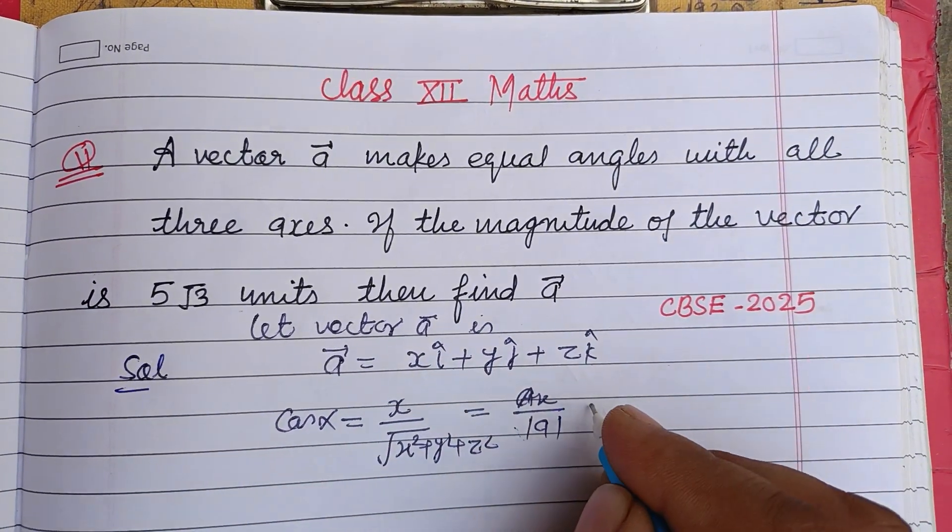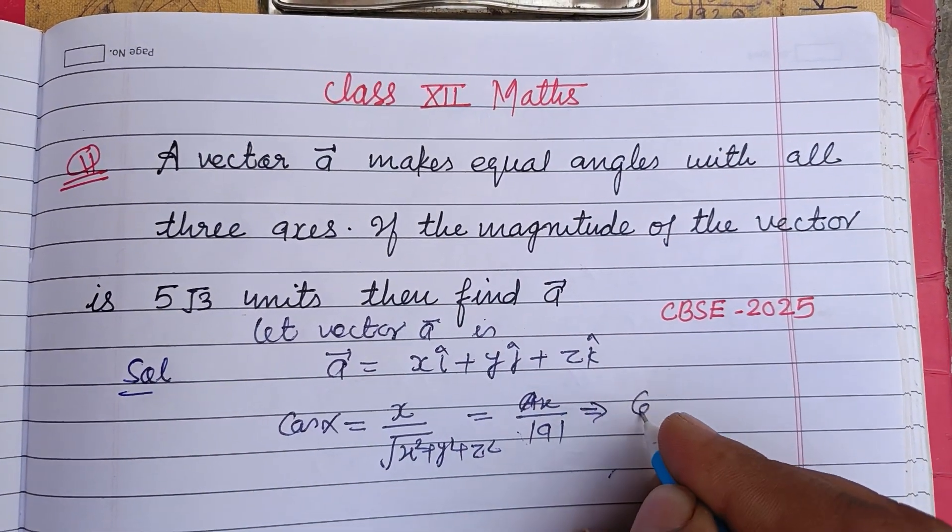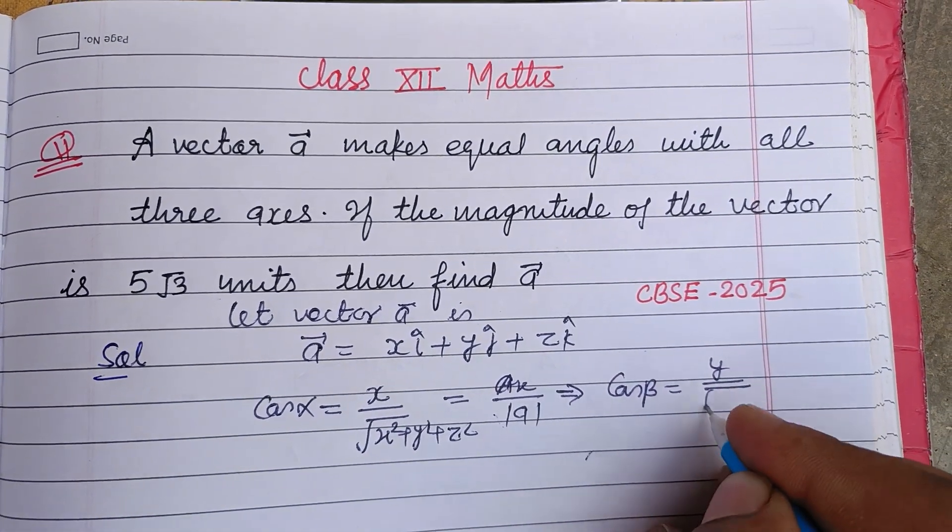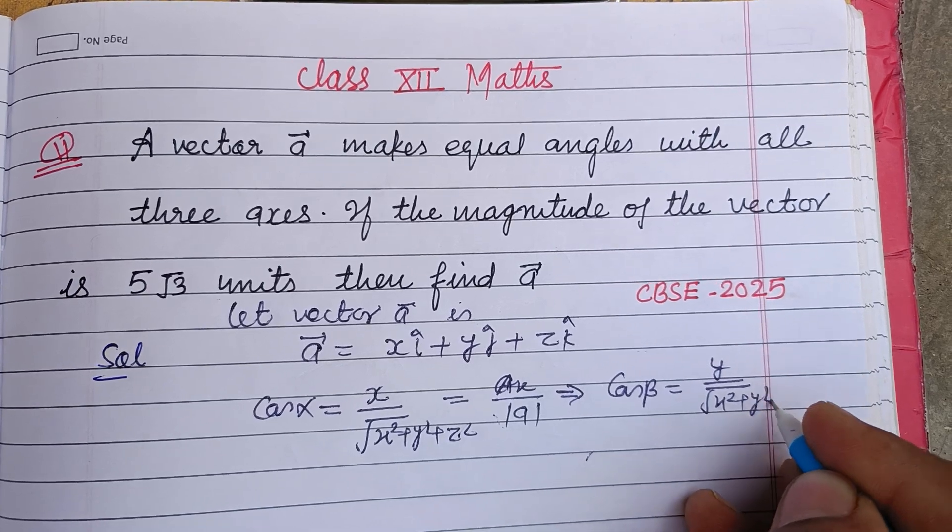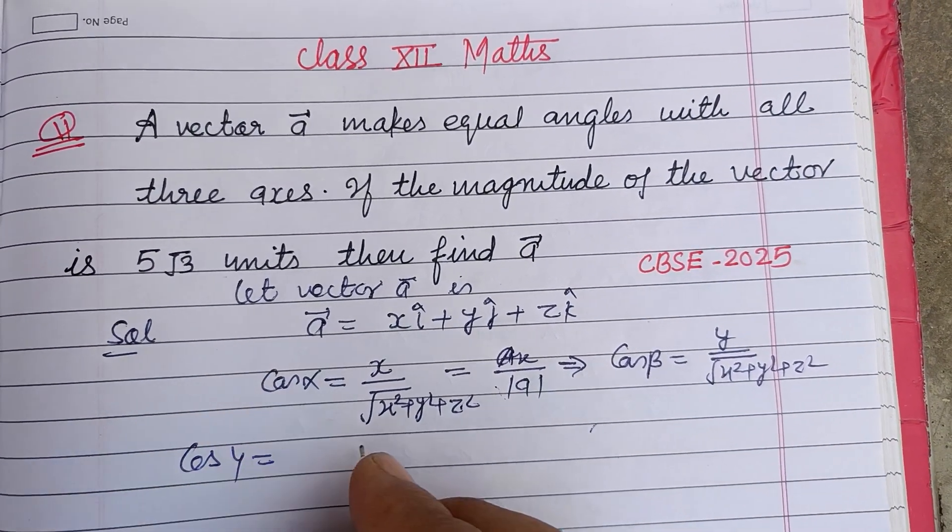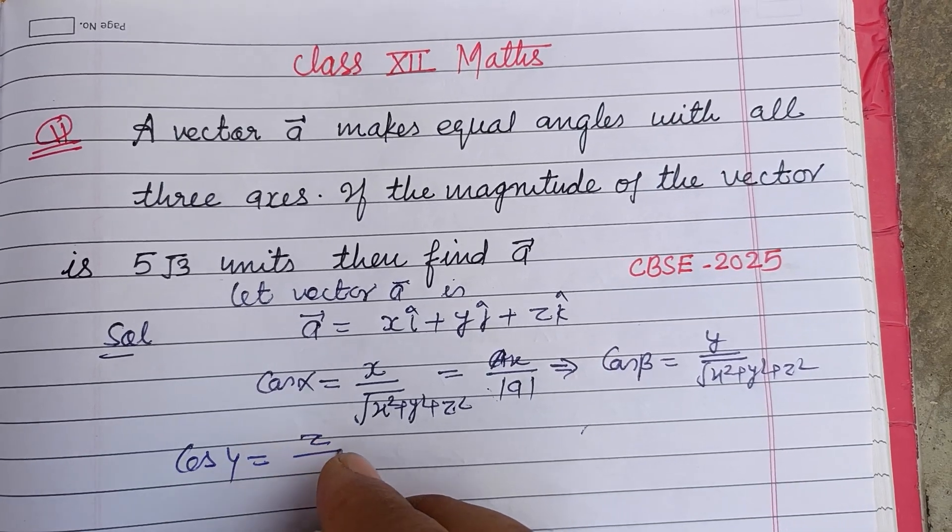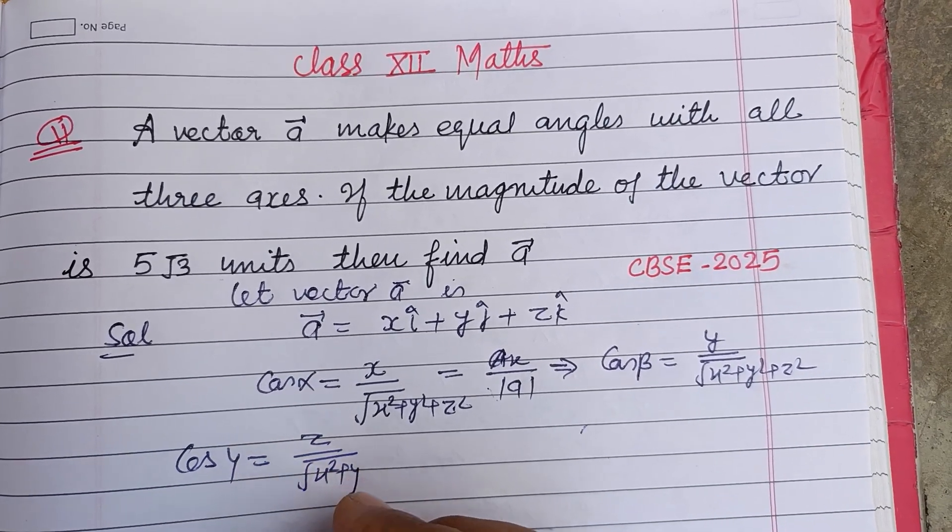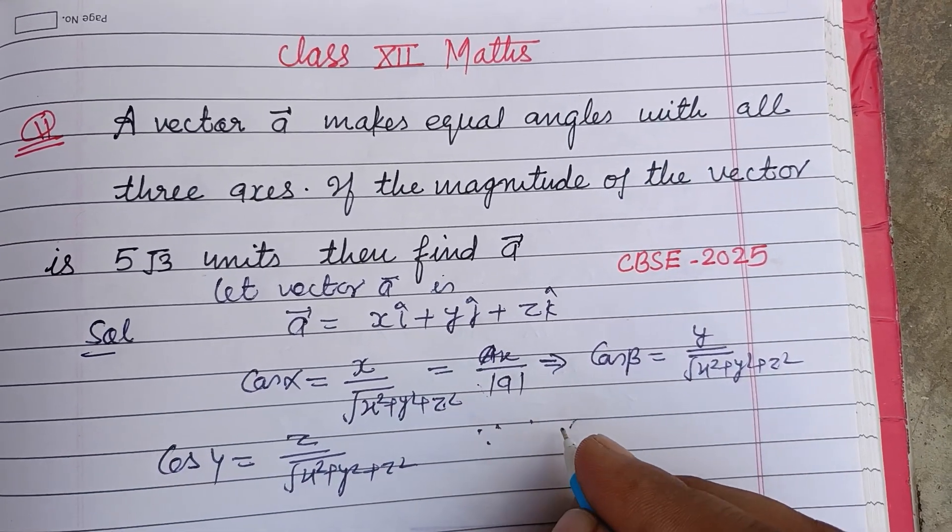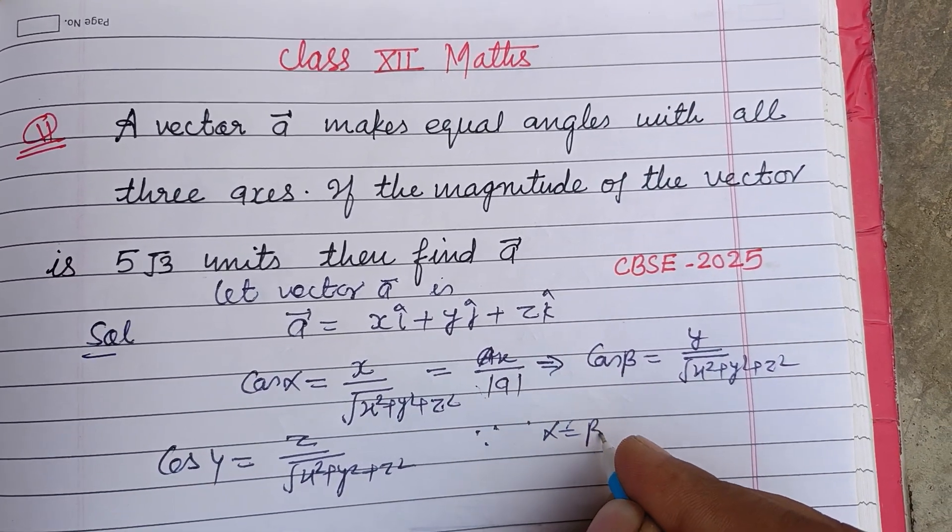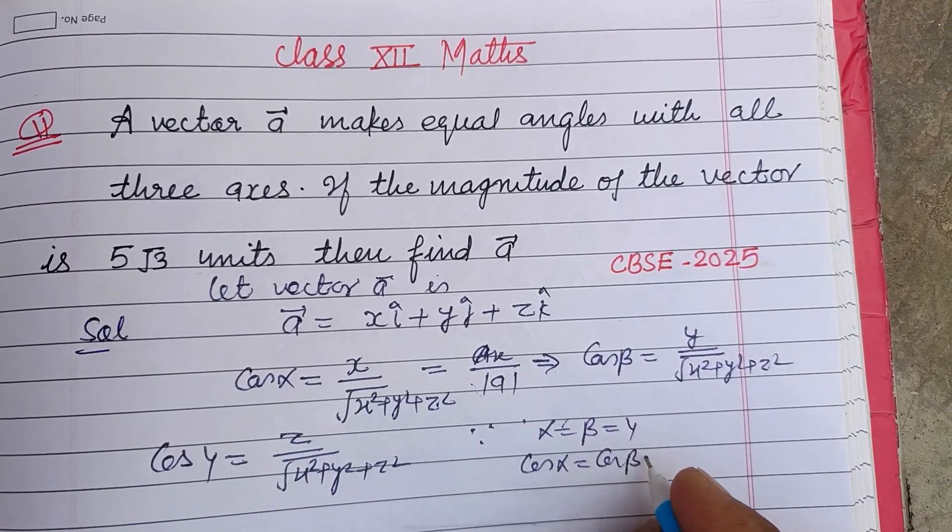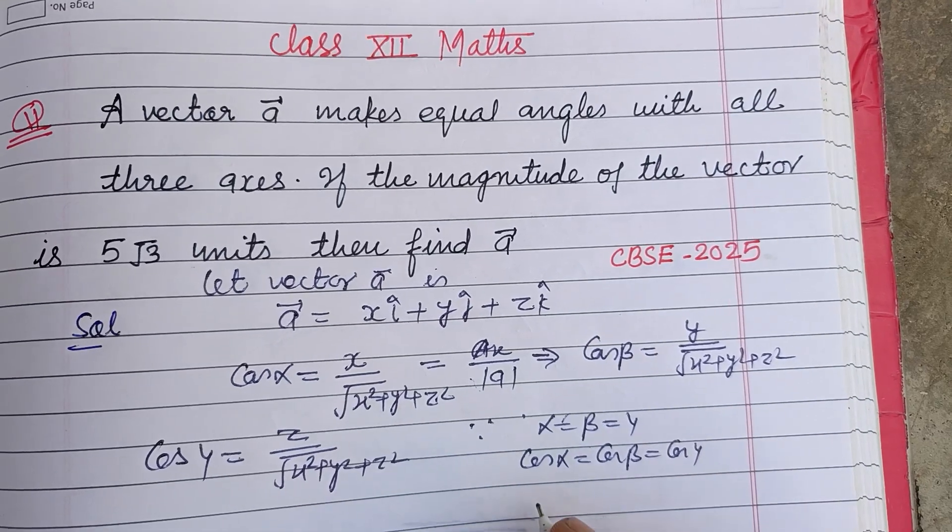And cos beta is y over root of (x squared plus y squared plus z squared), and cos gamma is z over root of (x squared plus y squared plus z squared). Since in the question alpha equals beta equals gamma, therefore cos alpha, cos beta, and cos gamma are also equal.